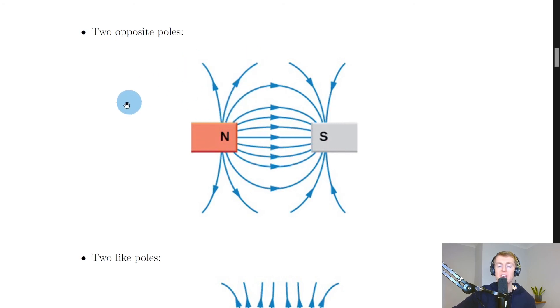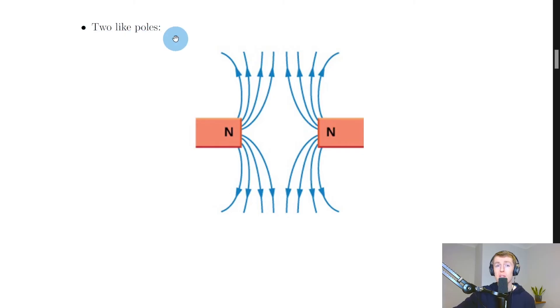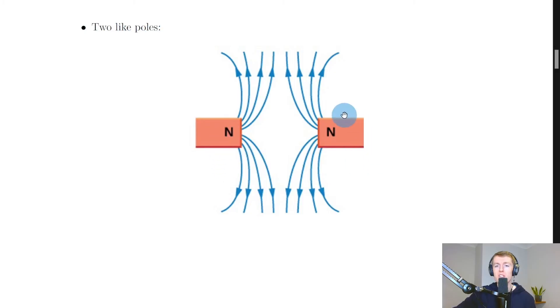For two like poles — either two north poles or two south poles near each other — we see repulsion. With two north poles near each other, you'll see they are repelling each other, and the field pattern in the middle shows this repulsion. That's the main idea here.